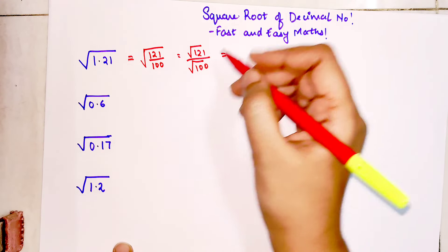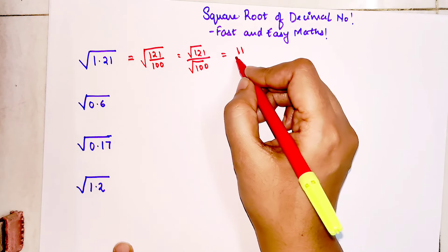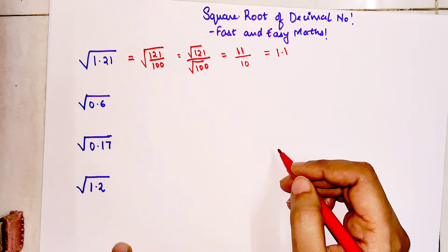Now we know that 121 is nothing but 11. Square root of 121 is 11 and square root of 100 is 10, so your final answer is just 1.1.